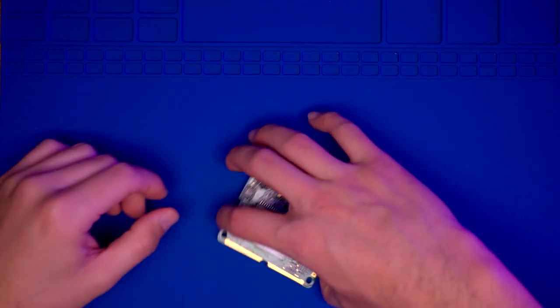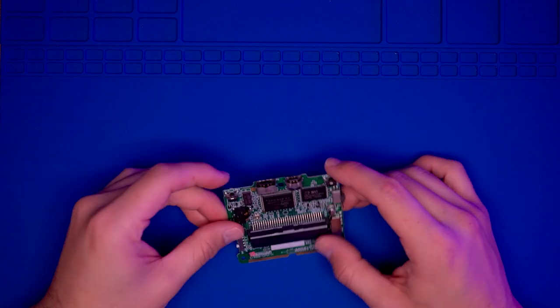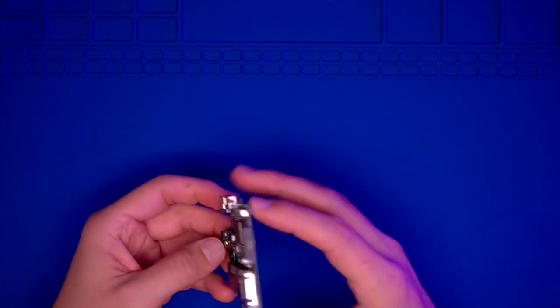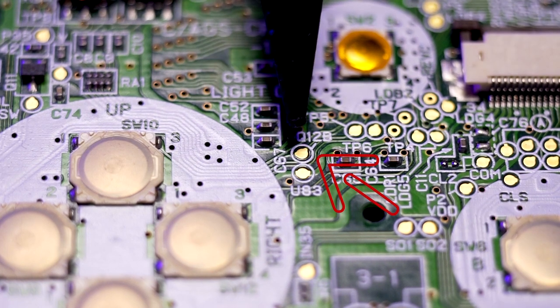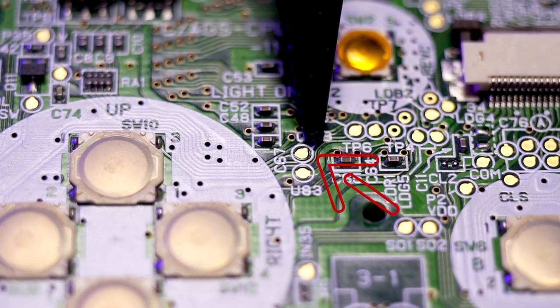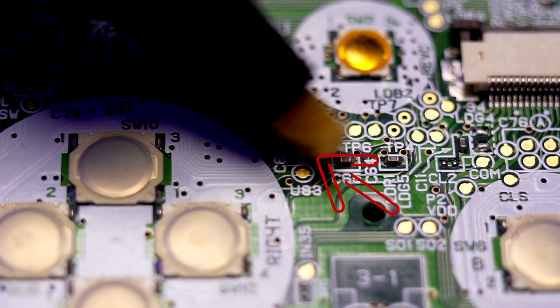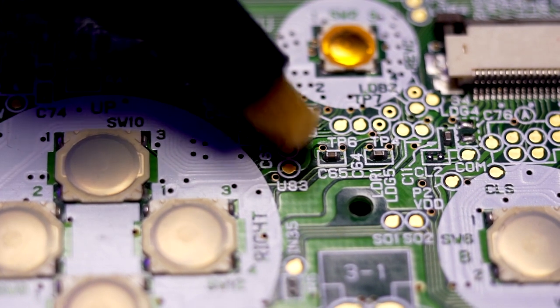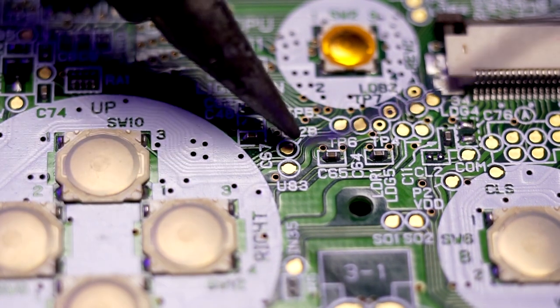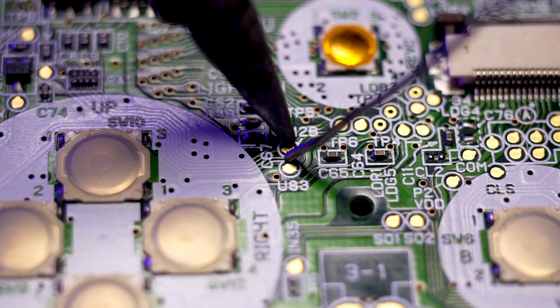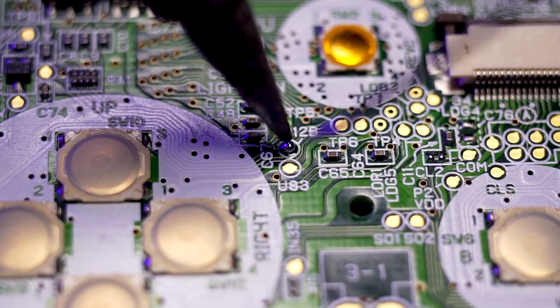Now we're going to solder the brightness wire onto the soldering pad labeled Q12B. We're going to add a little bit of flux, then add a little bit of solder and pre-tin the pad so that it's easy to solder the wire.